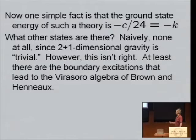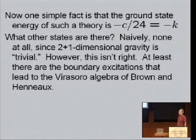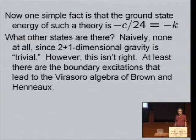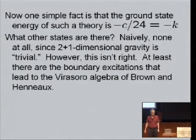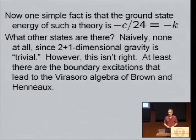Okay, well, the ground state has energy -K. What else is there apart from the ground state? Well, naively speaking, nothing, because 2+1-dimensional gravity is trivial. But that isn't right. At least there are boundary excitations that lead to the Virasoro algebra of Brown and Henneaux.